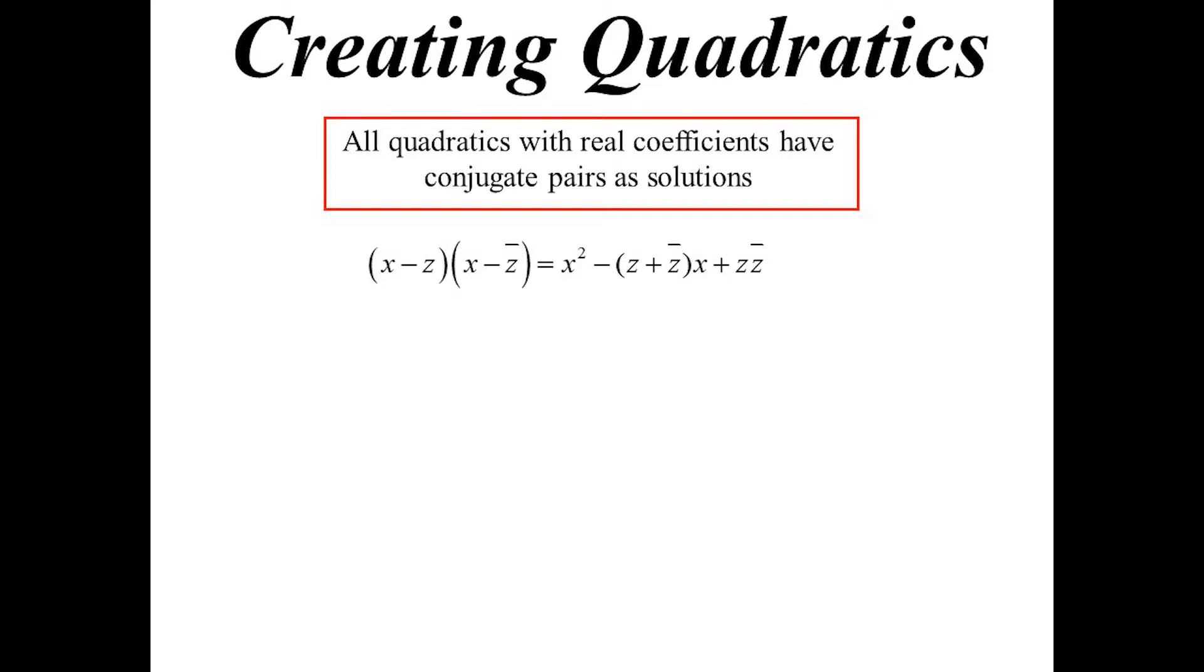Look at the coefficient of X. We'd end up with minus Z plus Z conjugate. Well, if you add a number with its conjugate, the imaginary part's going to disappear. Because one's going to be plus something i, the other one's going to be minus something i. So I've got a real number. Z times Z conjugate equals X squared plus Y squared.